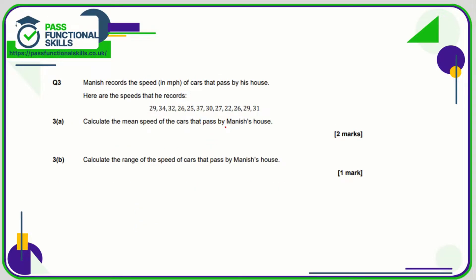Question three — again we can use the calculator. We need to add all of these values together. When we add them all together we get a total of 348, and we're going to divide that by 12 values. 348 divided by 12 is 29.